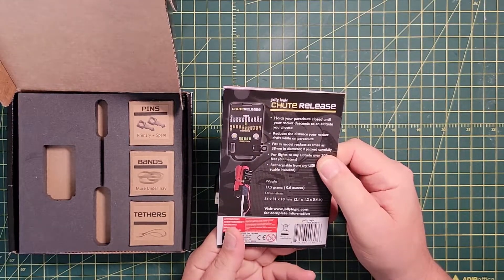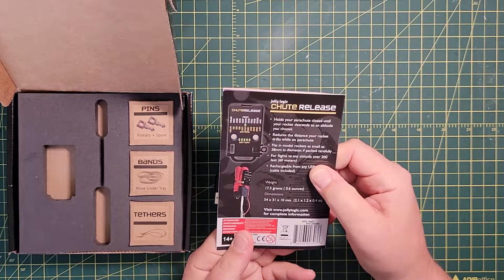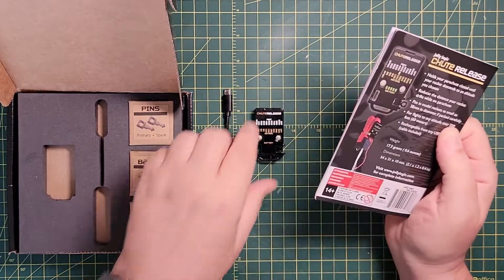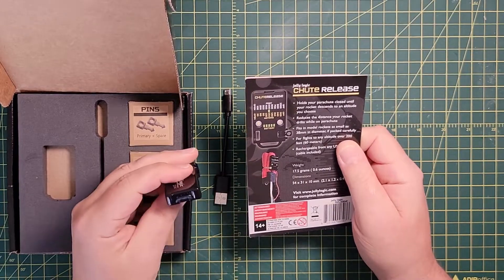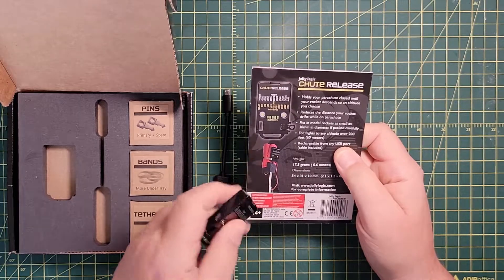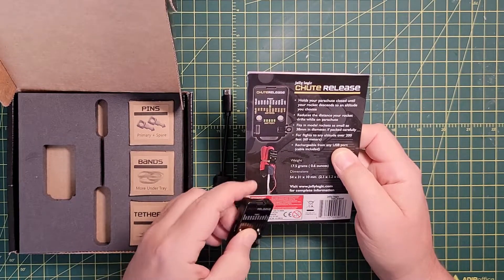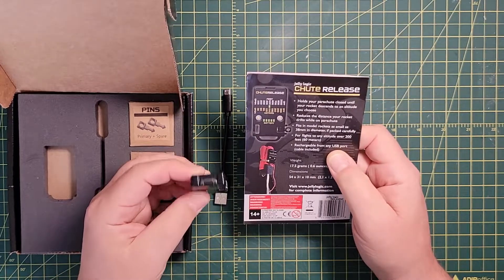Fits in a model rocket as small as 38 millimeters in diameter, if packed carefully. That would be, I'd say, BT-60 is probably your smallest chute. Now, this looks like it would fit in a BT-55, but you've got everything else you're packing around there. Because BT-55 is, I think, 33 millimeters. So it looks like it fit in a BT-55, but with all the other stuff you're packing in there, probably not. So it looks like BT-60 is going to be your minimum.